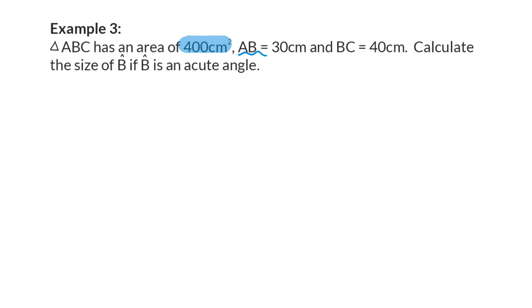As I've mentioned, here the area of the triangle is given along with two of the three dimensions normally used to calculate the area. It always helps to get a picture in mind. Here we were given that AB is 30 centimeters and BC 40 centimeters. We are asked to determine the size of angle B if it is an acute angle.